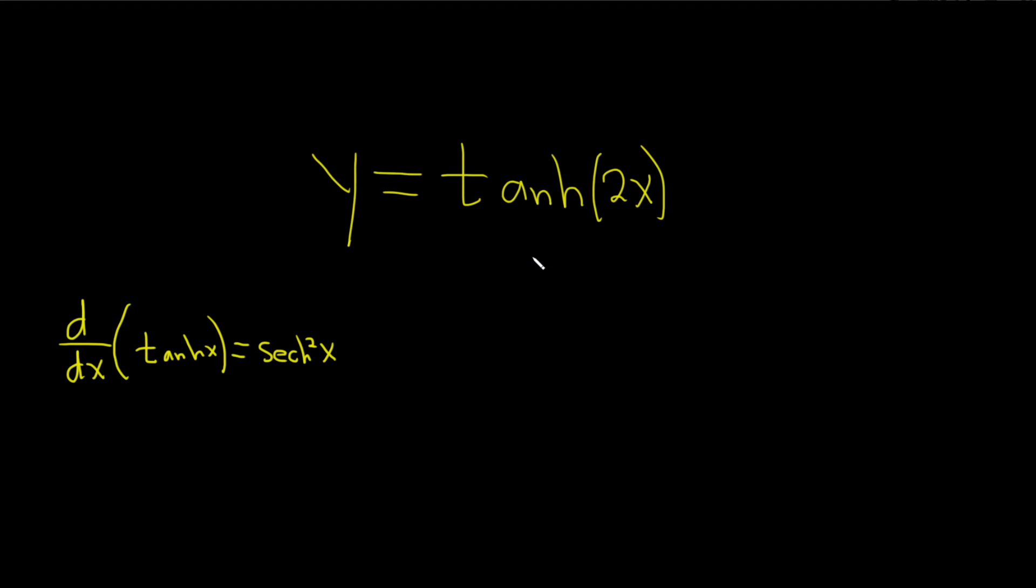So here, it's tanh of 2x, so we have to use the chain rule because it's not just x. So dy/dx, first we take the derivative of the outside function, which is tanh, so we use this formula. So it'll be hyperbolic secant squared of 2x, you leave the inside piece untouched.